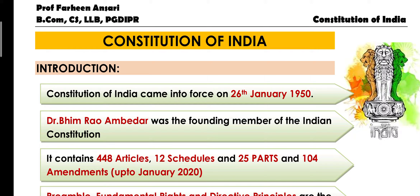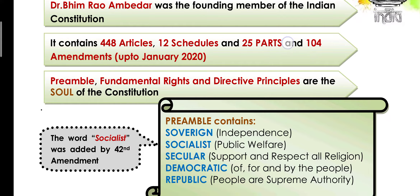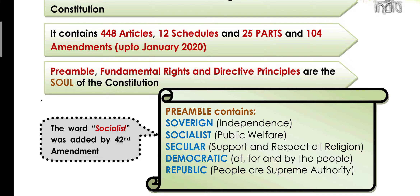India's constitution is one of the lengthiest constitutions in the world, with 448 articles, 12 schedules, and 25 parts, and 104 amendments as of January 2020. The soul of the Indian Constitution includes the preamble, fundamental rights, and directive principles — which we will look at step by step.